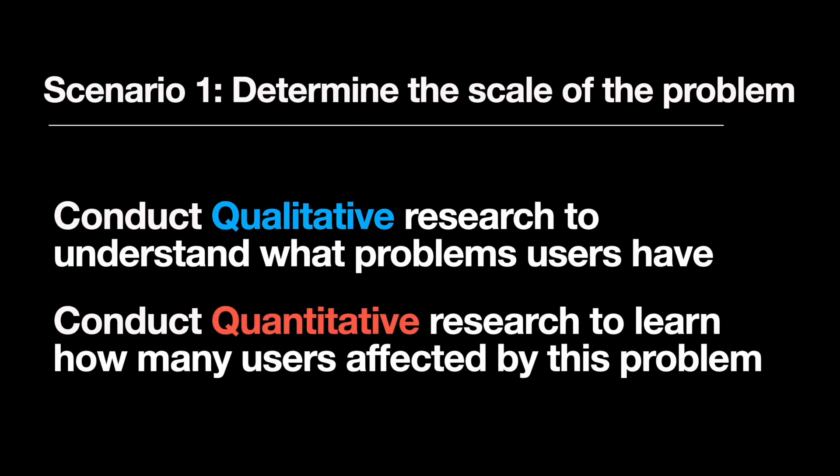The first scenario is about determining the scale of the problem. You can conduct qualitative research to learn the problems users face when interacting with your product, and then conduct quantitative research to understand the importance of those problems. If you learn that 90% of your users are affected by a certain problem, the priority of that problem is likely high.